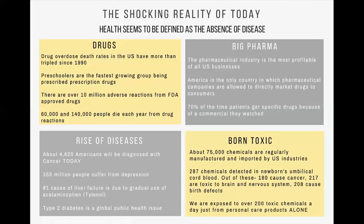About 75,000 chemicals are regularly manufactured and imported by U.S. industries. In newborns, an average of 287 chemicals are detected in umbilical cord blood — of those, 180 can cause cancer, 217 are toxic to the brain and nervous system, and 208 can cause birth defects. We are also exposed to about 200 toxic chemicals a day just from our personal care products — lotions, makeup, shampoo — things we don't even notice because they're part of daily life.